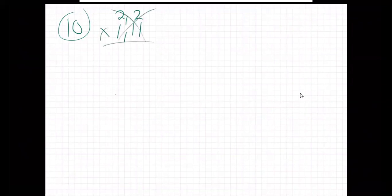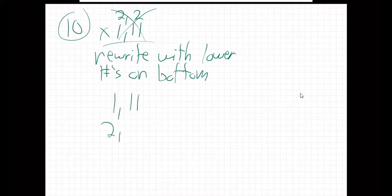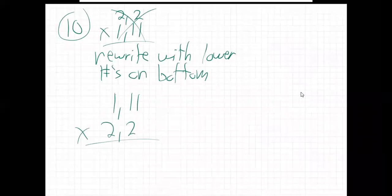So rewrite with the lower numbers on the bottom. So if they put way higher numbers on the top, you rewrite it to make it easier for yourself because the order of multiplying never matters. You know that 2 times 3 is 6. You switch it around, 3 times 2 is still 6. It doesn't matter. We can switch the order. This will be way easier. So put the lower numbers on the bottom.